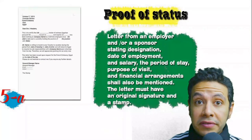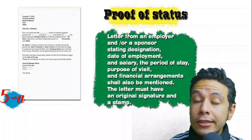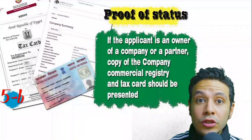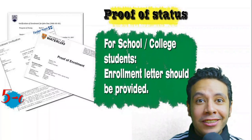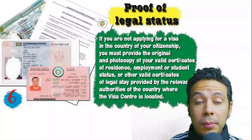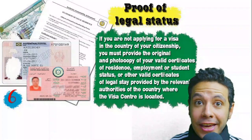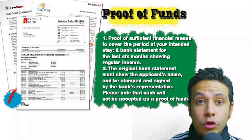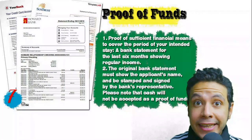Fill the application form as shown in the video. In most visa application processes you will need a proof of status — if you are an employee, provide a letter from your employer or HR department mentioning your name, work details, salary, address, and contact numbers with original signature and stamp. If you own a business, your commercial registry and tax card must be presented. If you are a student, provide an enrollment letter from your university or school. If applying from a country different than your own, you need proof of legal residence, or a valid residence visa may be accepted. You will also need proof of sufficient funds — a bank statement for at least six months, showing your name, signed and stamped by the bank; cash is not accepted as proof of funds.